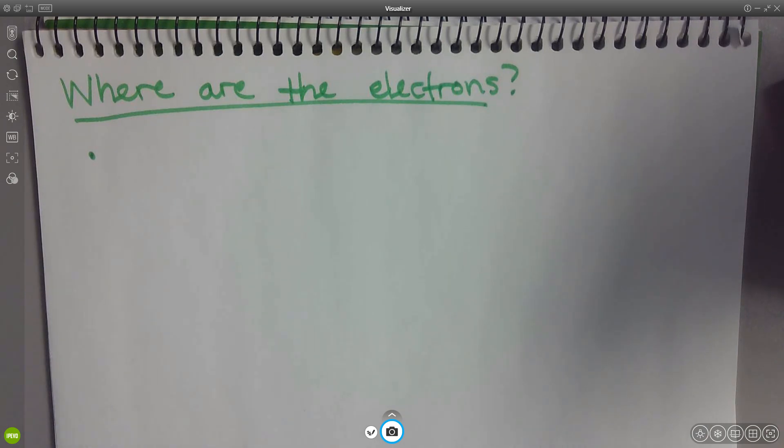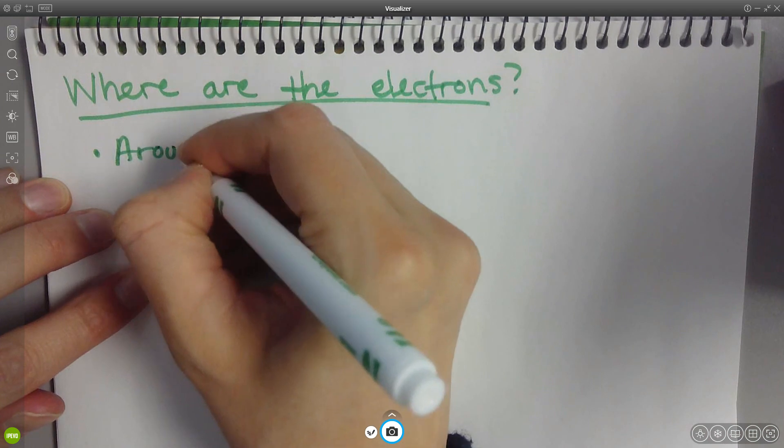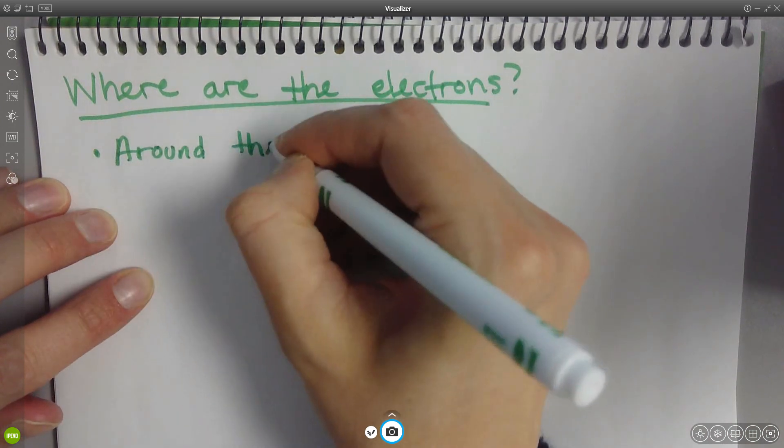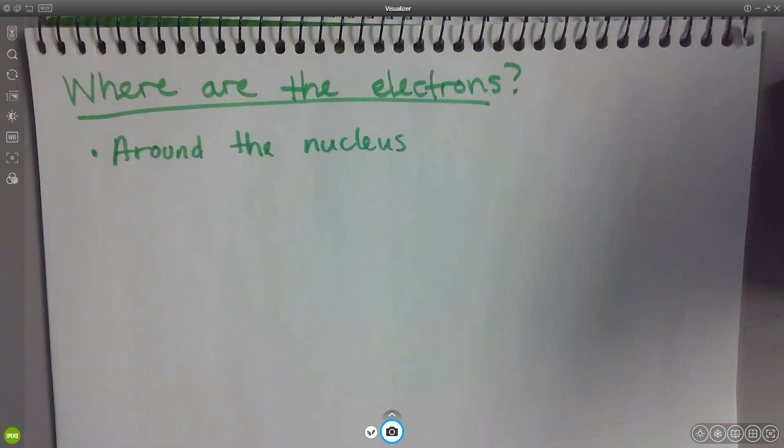All right, so first off you guys know where are the electrons? Around the nucleus, right? You can do a heck of a lot of chemistry with no deeper understanding than that. However, it is not that simple.